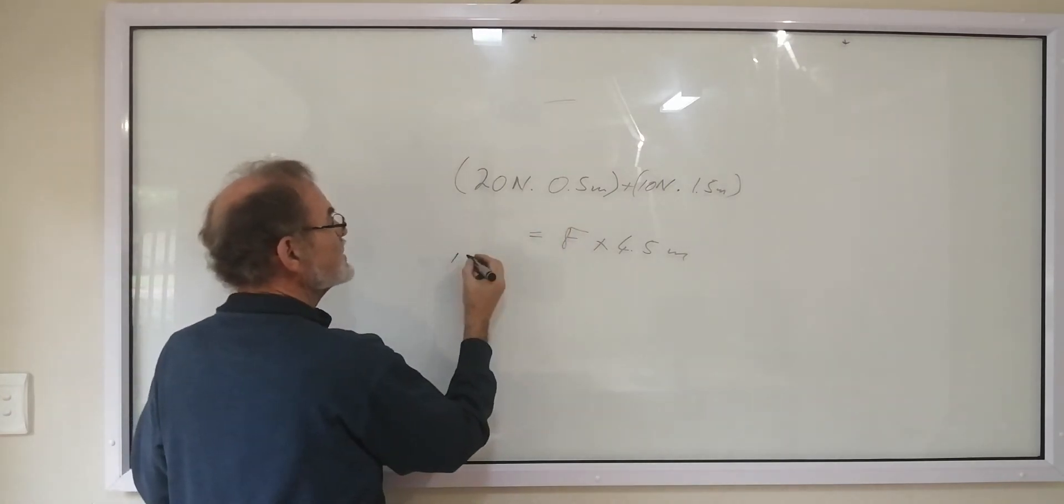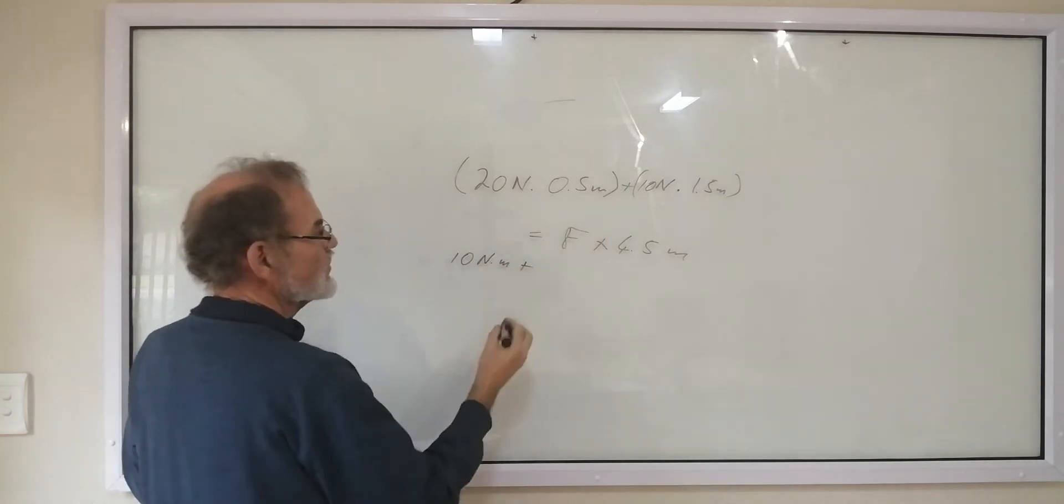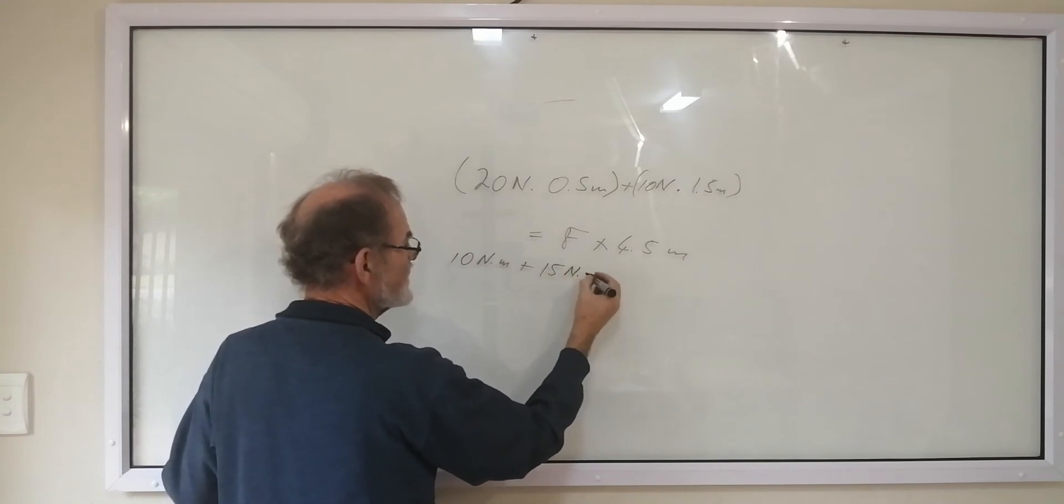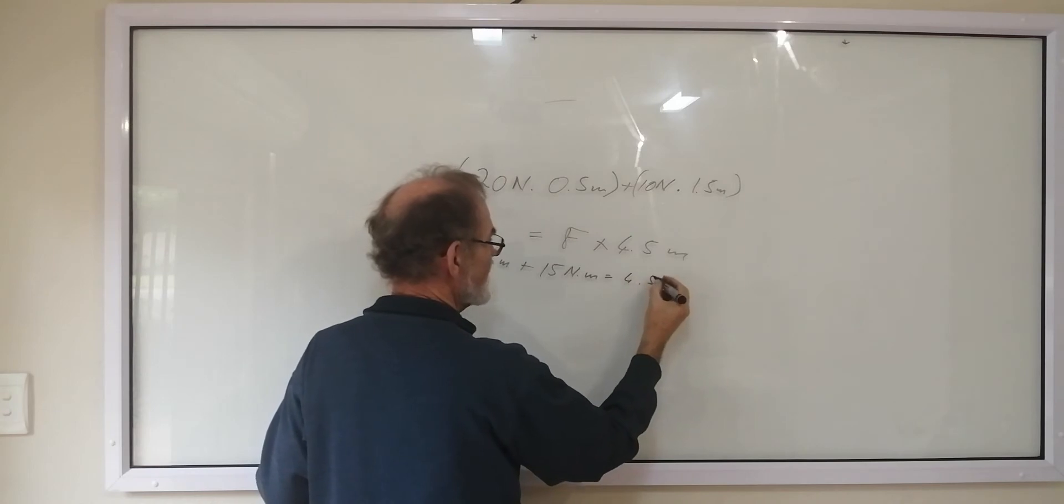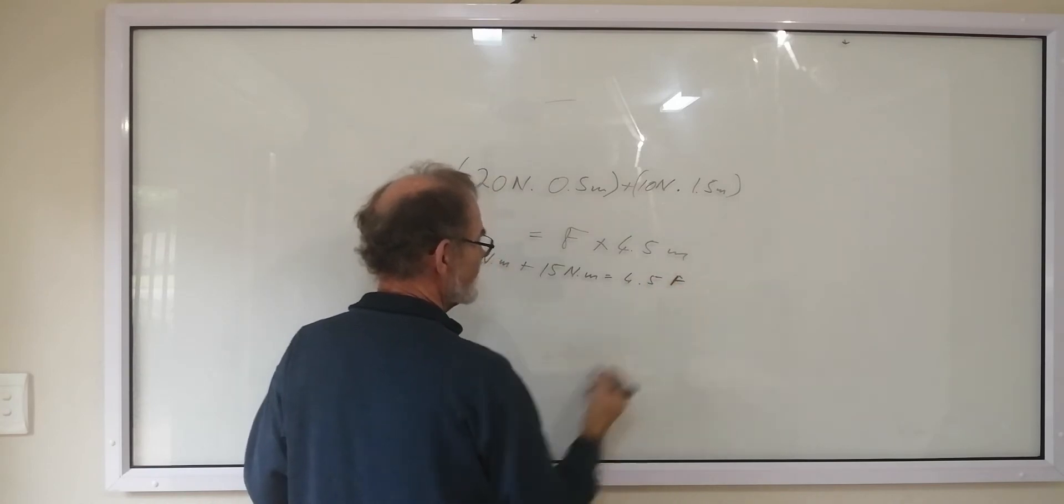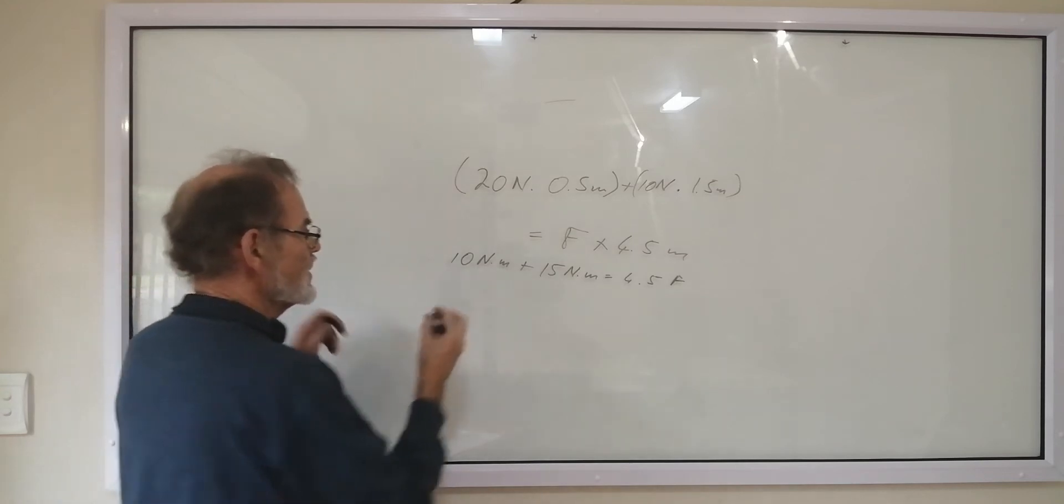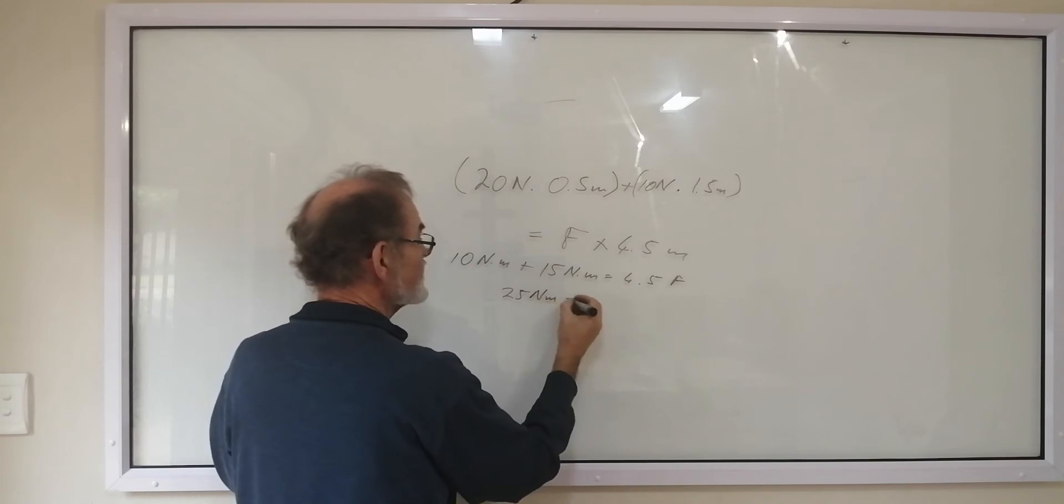So we multiply this, we get 10 newton meters plus 15 newton meters, which is equal to 4.5 multiplied by F. So now we can solve this. This is 25 newton meters, which is equal to 4.5 times the force.